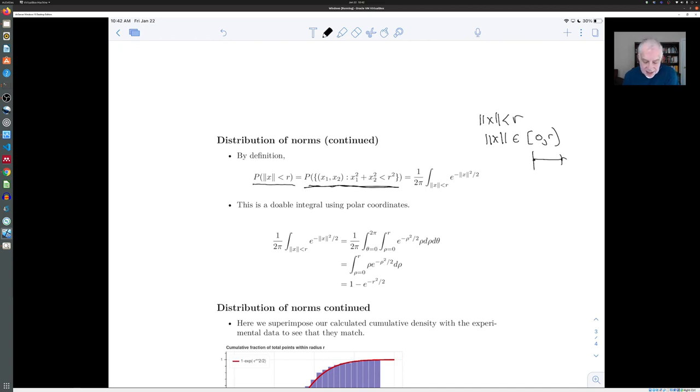The zero is missing because absolute value of X is automatically bigger than or equal to zero. So I didn't bother to write it. And that's this condition. The condition that absolute value of X is less than R is precisely the condition that the point X one, X two lies in the circle of radius R.